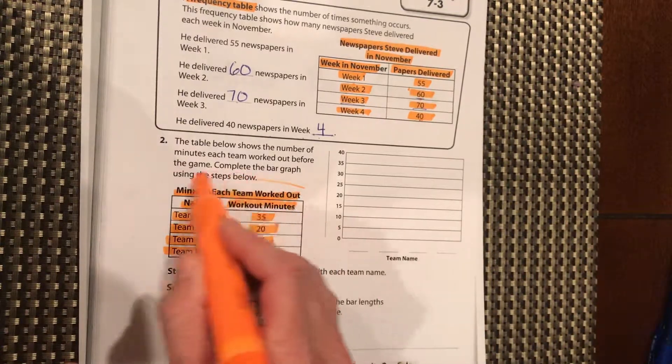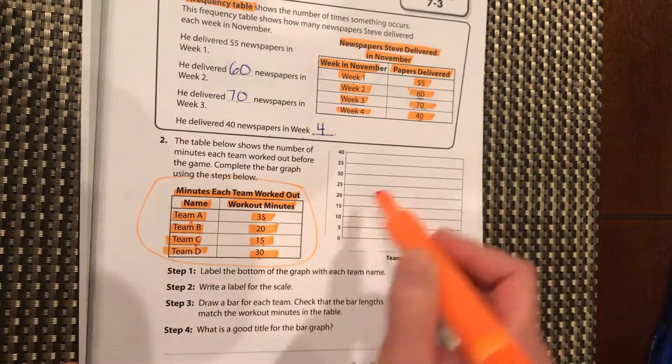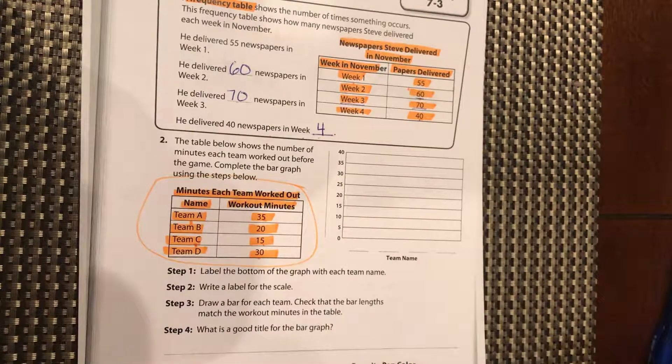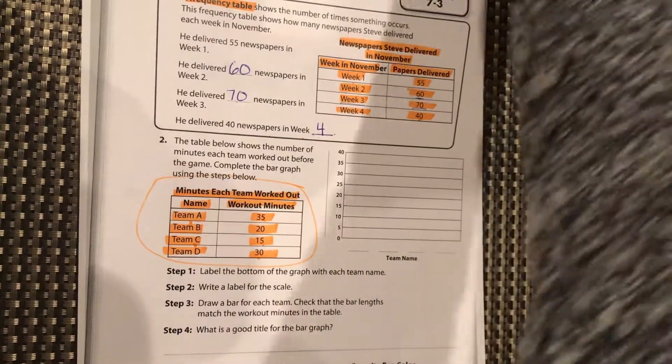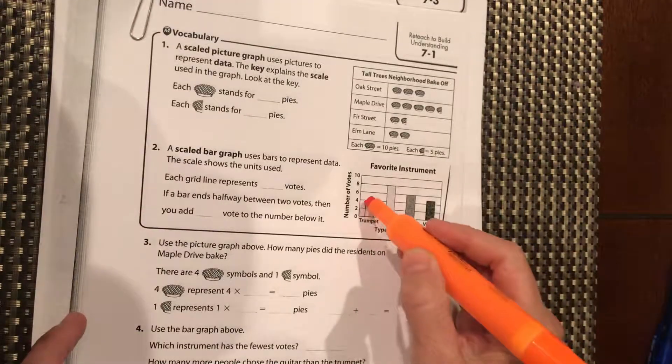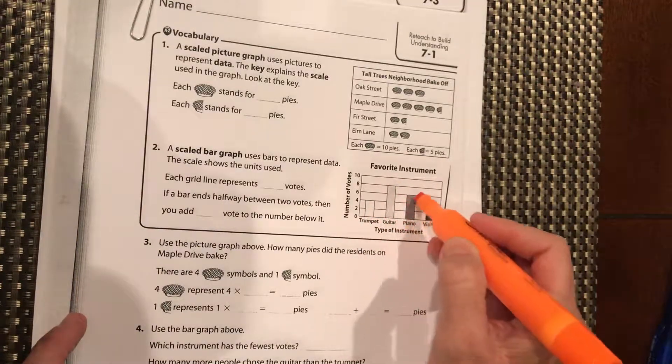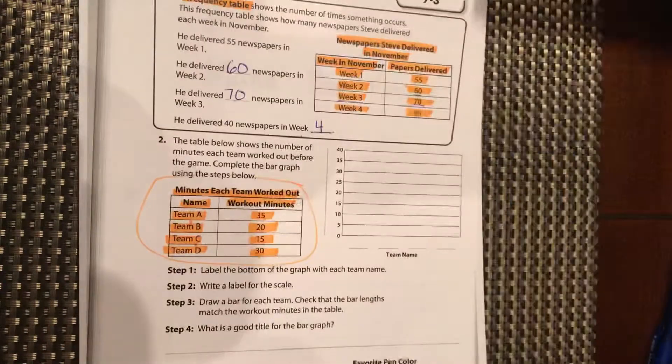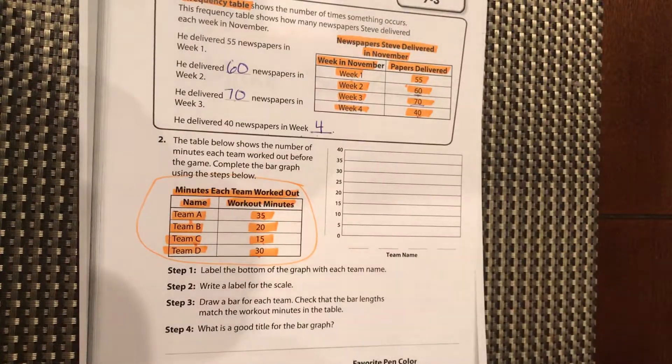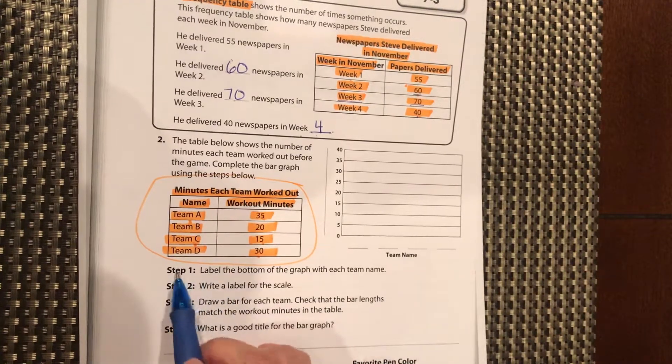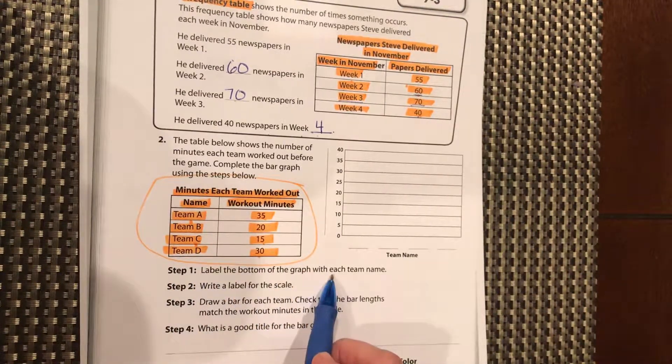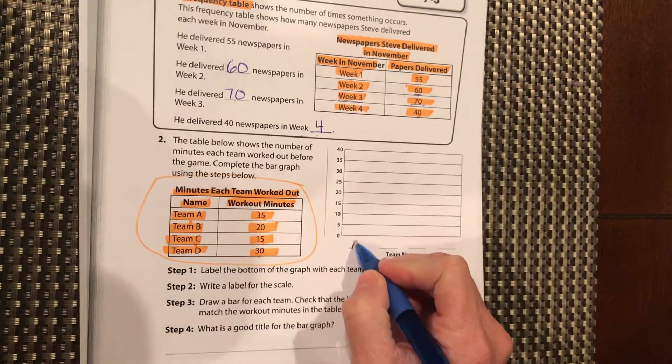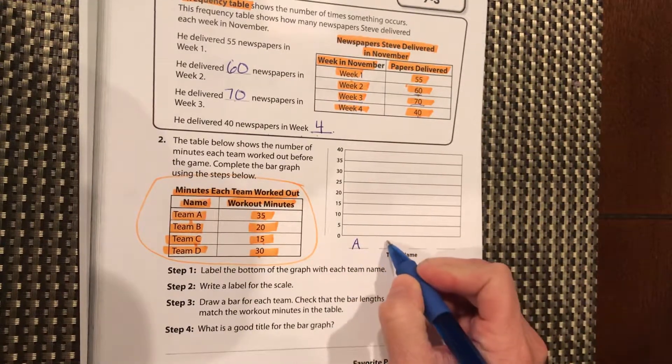Now they want us to use this data to fill out a bar graph. Remember, a bar graph is like this, where we fill up the bars up to the number of minutes that each team worked out. So we're going to do our team names. Step one, label the bottom of the graph with each team name. I'm going to put team A here. What do you think we should put here? B.